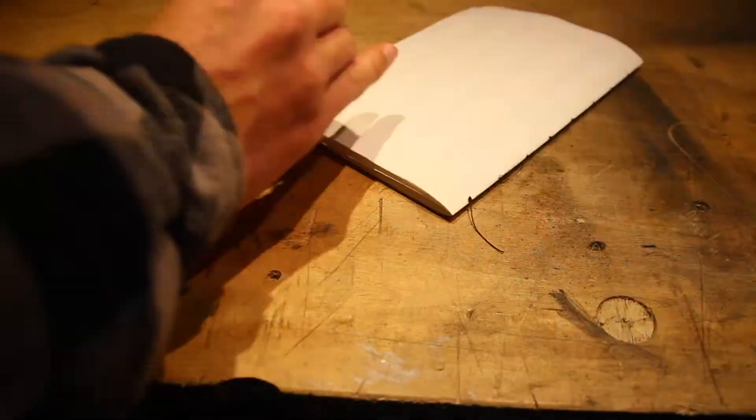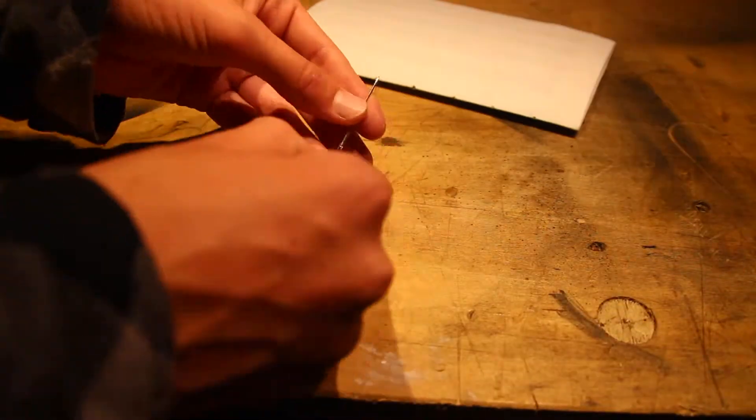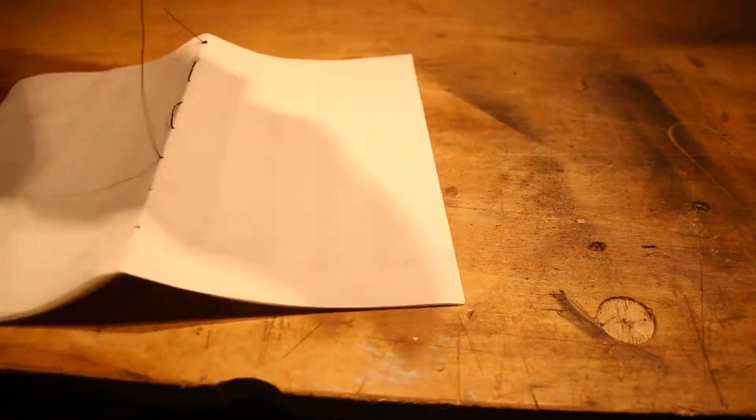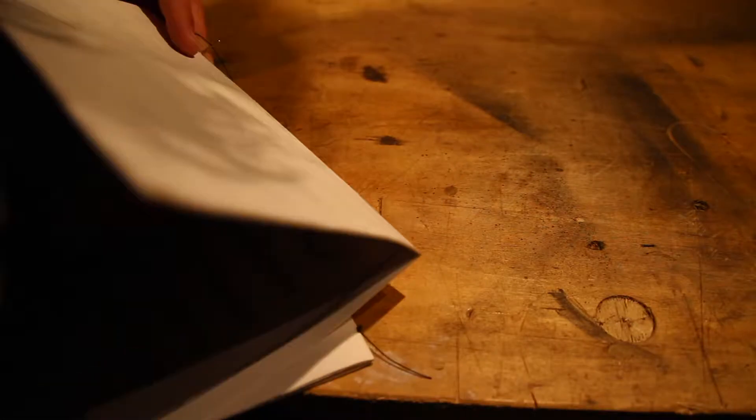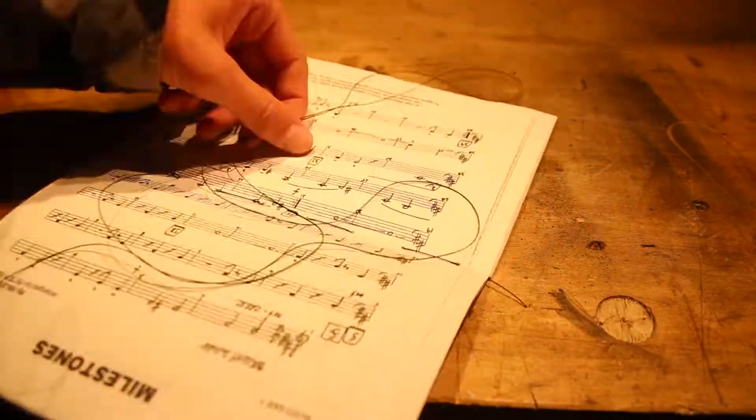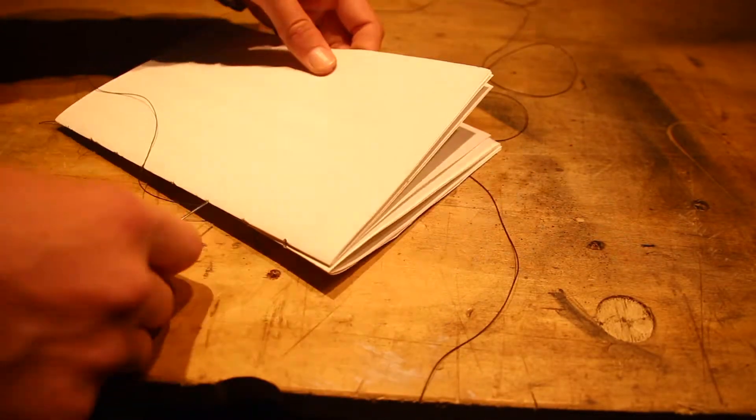For some reason I didn't record it, but I cut the side of the binding with a knife to get all of the holes in even places. Then I started stitching, and this was really tedious.